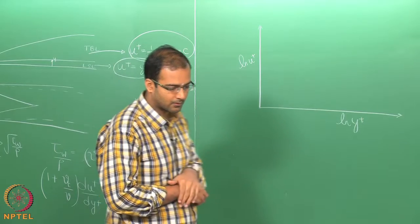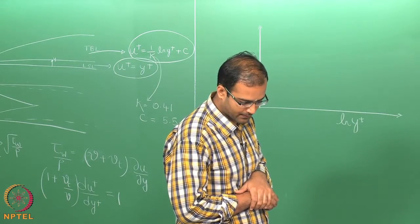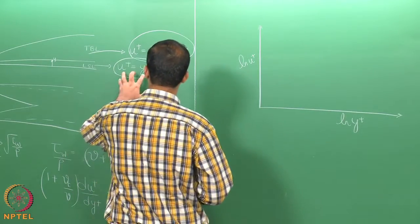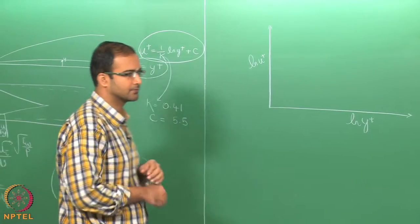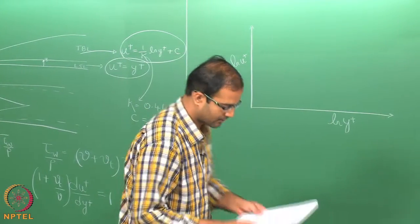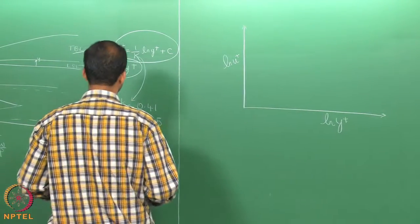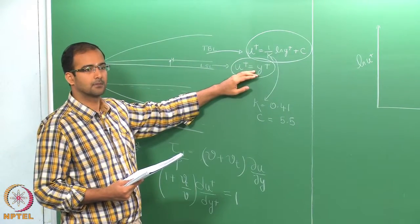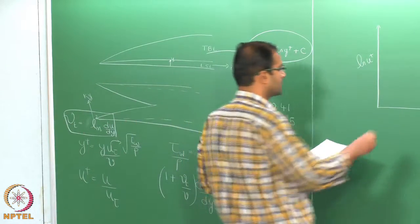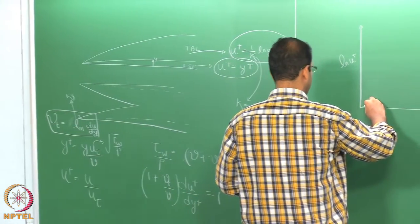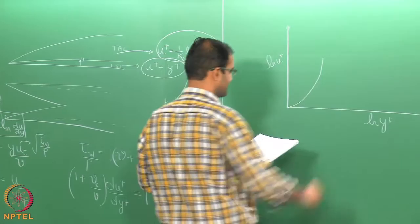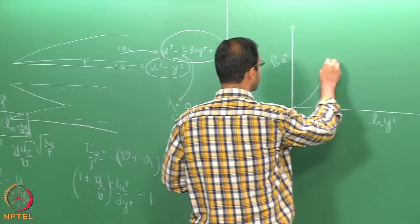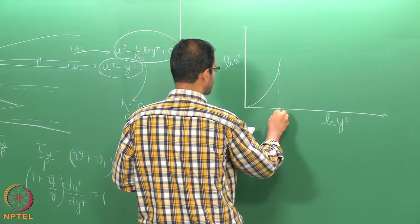If you plot on a log scale for y+, the linear profile u+ = y+ will look like a curve on the logarithmic x-axis. The u+ axis can remain on a linear scale, because the variation of u+ is not as dramatic. On a log scale for y+, going from 0 to 5, then 50, 100, 500 — the linear law plots as a curve and the log law (u+ = ln(y+)) plots as a straight line.